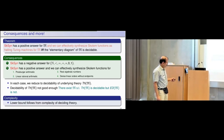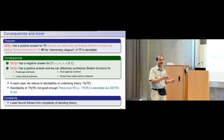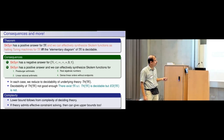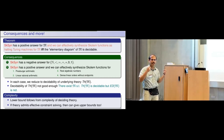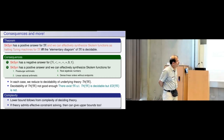How much time does it take to compute these Skolem functions using these Turing machines? The lower bound follows from the complexity of deciding the theory — you can reduce the decision problem for the theory to computing Skolem functions. For the upper bound we do not have very comprehensive results. If the theory admits effective constraint solving, we can give some upper bounds, but the bounds are very far apart and we do not know how to close them.